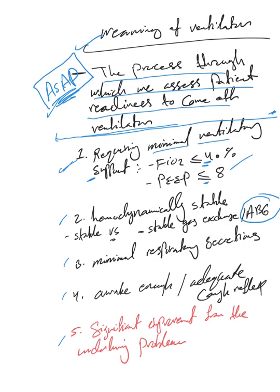The second thing: hemodynamically stable. I'm not going to start weaning in a patient on multiple vasopressors, still hypotensive, or still spiking high fever, or the ABG and gas exchange still bad. So it's very important that the patient is hemodynamically stable in terms of vital signs and in terms of gas exchange and ABG.